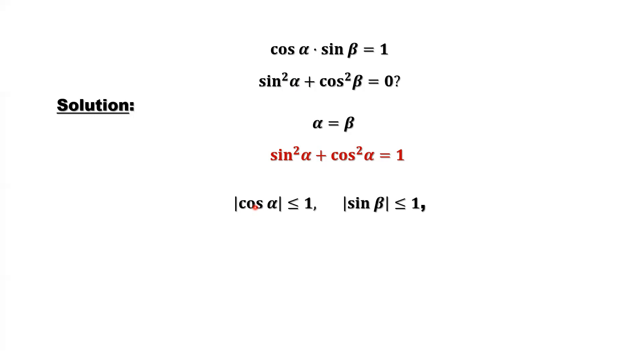sine beta, cosine alpha, cosine beta are bounded by positive one and negative one. This means cosine alpha is bounded by positive one. Similarly, absolute value of sine beta is bounded by positive one.